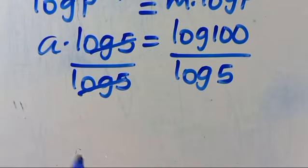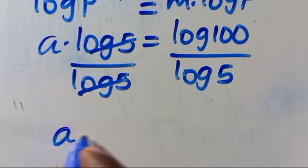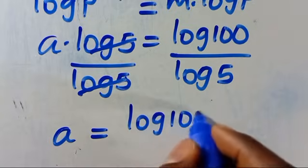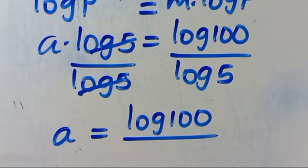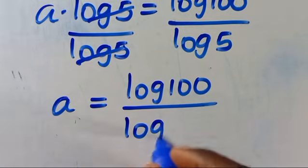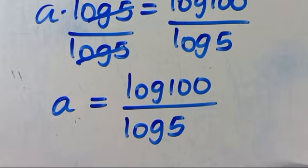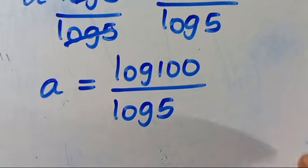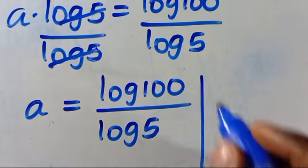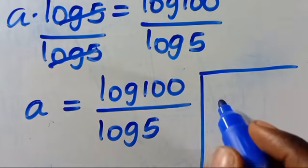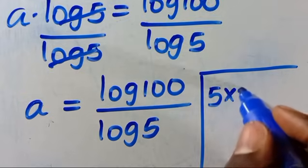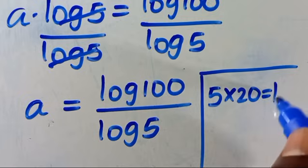So we are going to have A equals log 100 divided by log 5. Then recall that 5 times 20 equals 100.